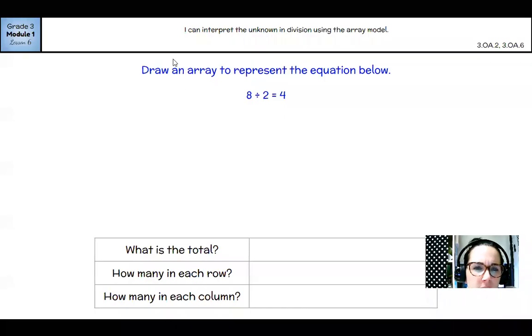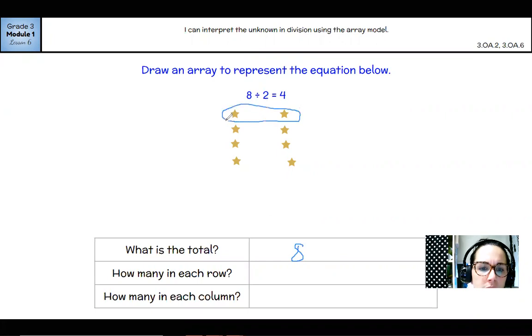Okay, let's try another one like that. This one is 8 divided by 2. So I'm going to grab my stamps again. I'll do stars. 8 divided by 2. So if I have two sections or two groups, I have to fair share 8 between those two. So 1, 2, 3, 4, 5, 6, 7, 8. So what is the total? There is a total of 8 stars. How many are in each row? Rows go side to side. There are 2. And how many are in each column? Columns go up and down. There are 4. So 8 divided by 2 equals 4.